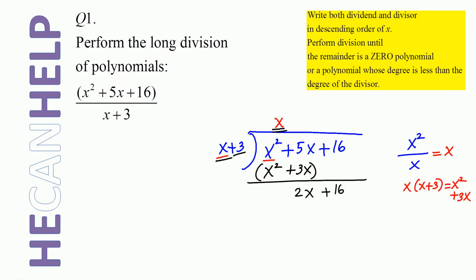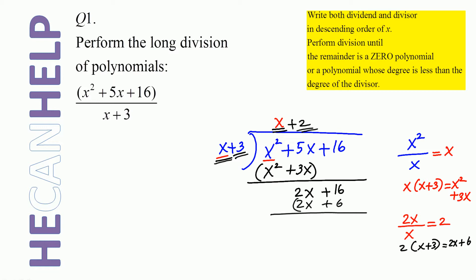Now what is the leading term? It is 2x. And what is the leading term of the divisor? x. What is 2x divided by x? 2. So take it up. And what is 2 times x plus 3? It is 2x plus 6. So 2 times x is 2x, 2 times 3 is 6. What is 2x minus 2x? 0. So what is the remainder? Remainder is 10.